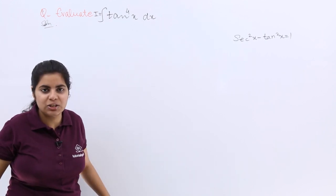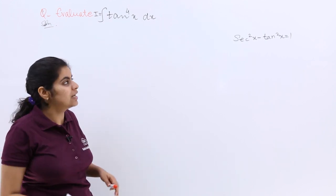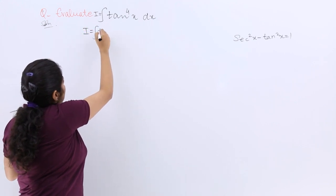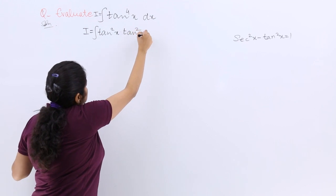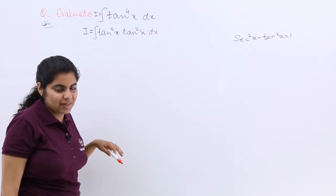So let's start with the solution. My question is I is equal to tan raised to the power 4x which can be split into two twos. So it is tan square x multiplied by tan square x.